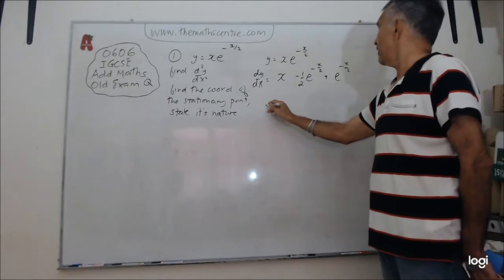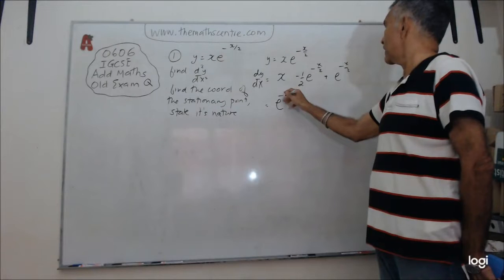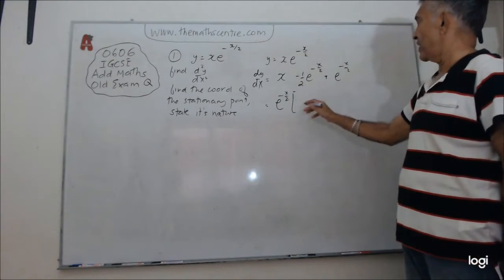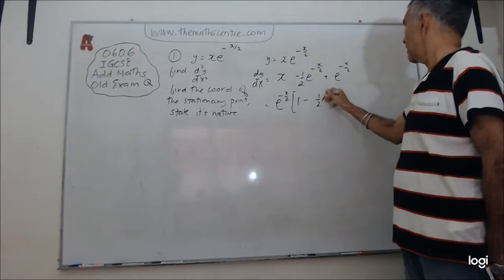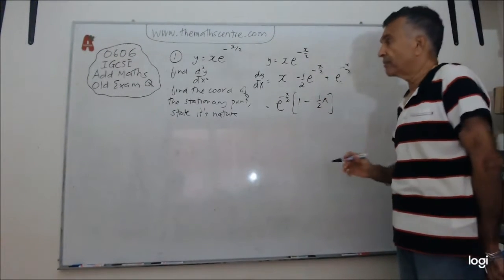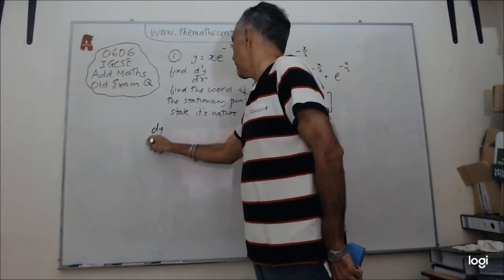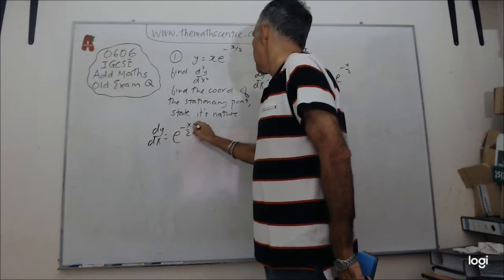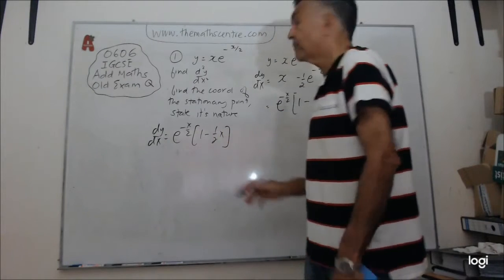So now I have, let me take out the common term here, e to the power of minus x over 2. And what do I have? Let me bring this to the front here. So I have 1 minus half x. Let's leave it there. So let me write it here, so that I can erase the board. So dy/dx equals e to the power minus x over 2, 1 minus half x. That's done.